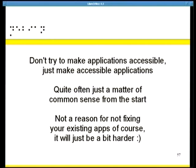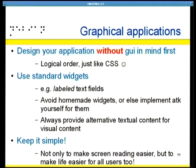In the end, making an application accessible is not so difficult. It's just making it accessible from the start by writing things logically, not visually — common sense. Design your application without graphical output in mind so you only have logic. The screen reader will be happy — it's a bit like CSS. Use standard widgets because they have been made accessible. If you write your own widget, implement ATK to expose information. If you have images, provide alternative text. And keep things simple — that helps everybody, particularly people with cognition issues.